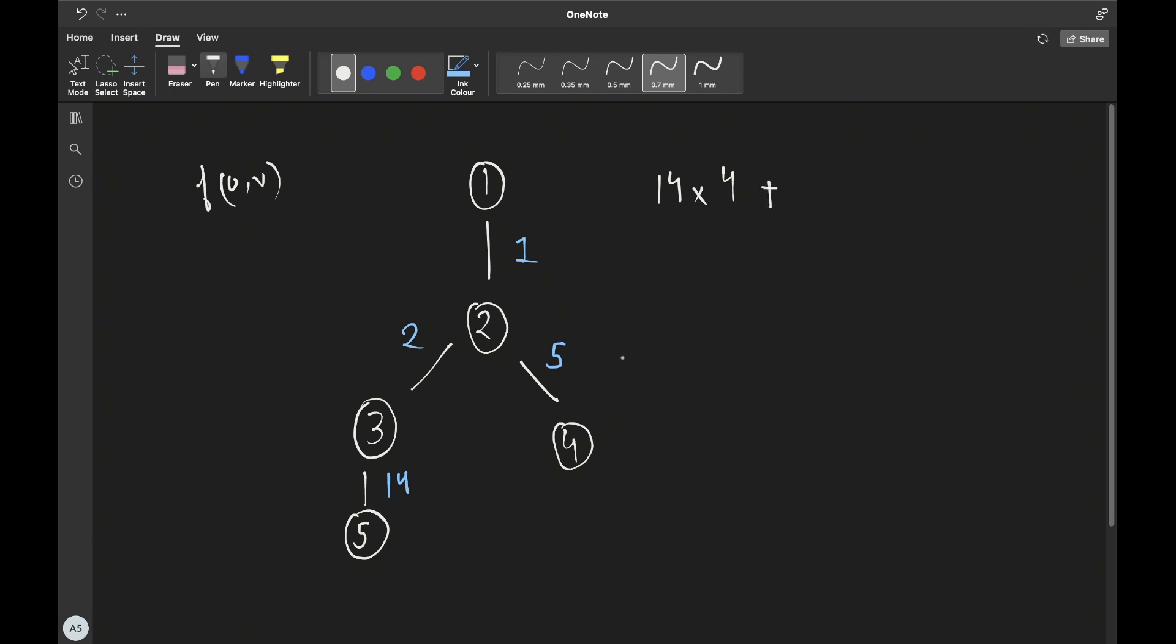Now let's consider edge weight 5. We have three nodes 1, 2, and 3 which is this component, and every node in this component has a path to node 4 which crosses this edge with weight 5. Since it's the maximum edge weight, we add this to our answer, so that would be plus 3 times 5.